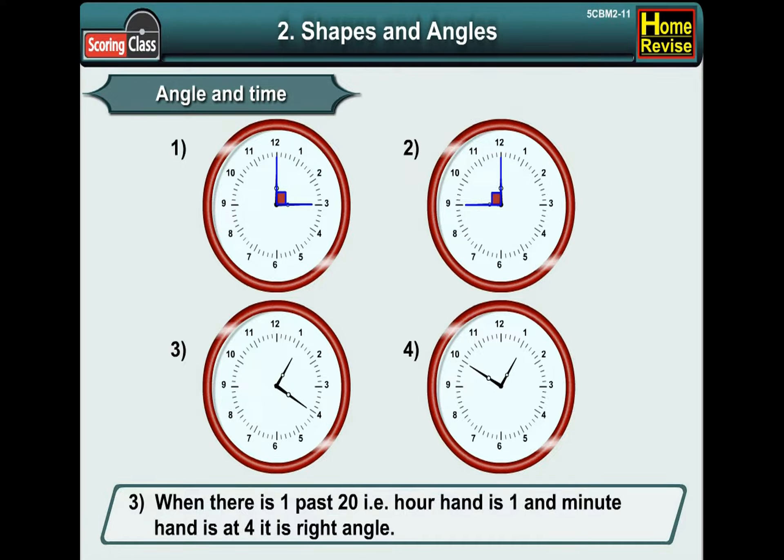Number 3. When there is 1 past 20, that is, hour hand is at 1 and the minute hand is at 4. It is a right angle again.